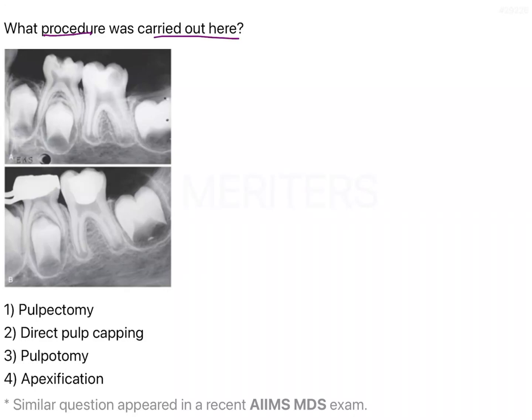What procedure was carried out here? In this question we have been given two radiographs — one is a pre-op radiograph and one is a post-op radiograph. On the basis of these we have to identify the procedure that was carried out.